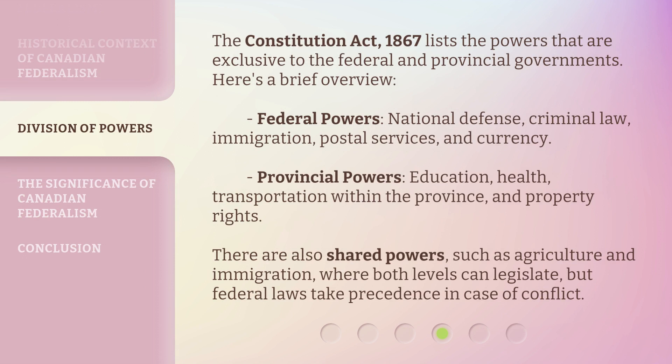The Constitution Act, 1867, lists the powers that are exclusive to the federal and provincial governments. Here's a brief overview. Federal powers include national defense, criminal law, immigration, postal services, and currency. Provincial powers include education, health, transportation within the province, and property rights. There are also shared powers, such as agriculture and immigration, where both levels can legislate, but federal laws take precedence in case of conflict.